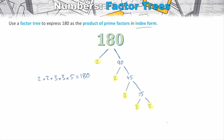The question asks us to write this in index form, which we covered in the last video. We have 2 × 2, which is 2 squared, and 3 × 3, which is 3 squared, multiplied by 5. So 180 expressed as a product of its primes in index form is 2² × 3² × 5.